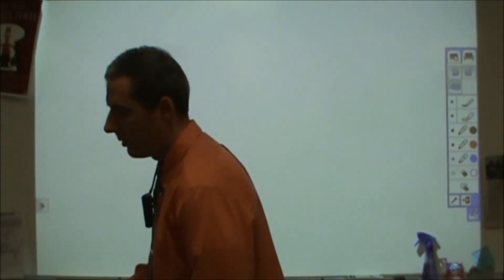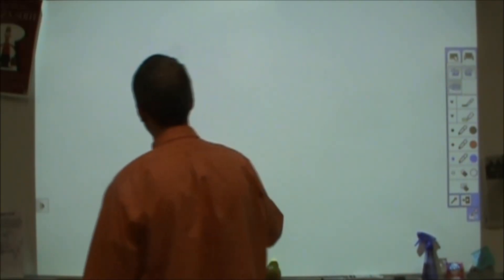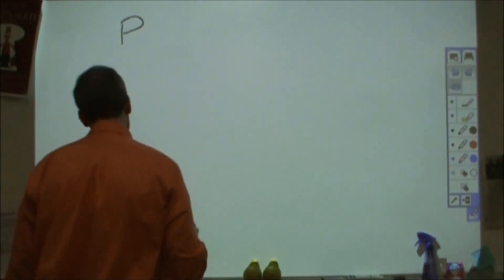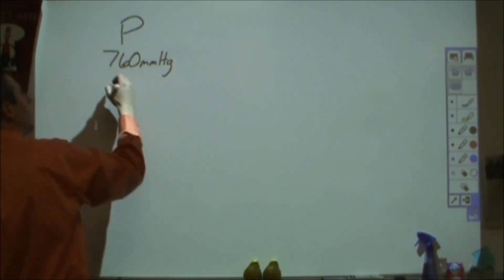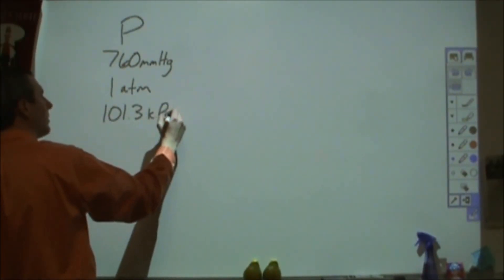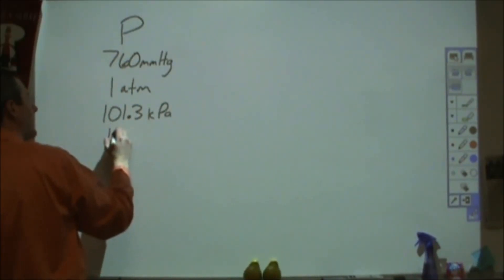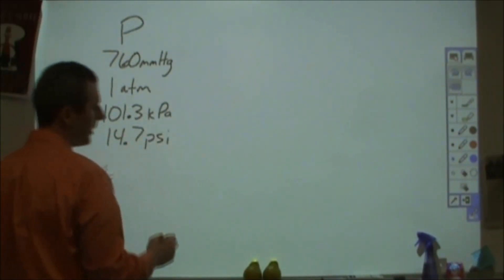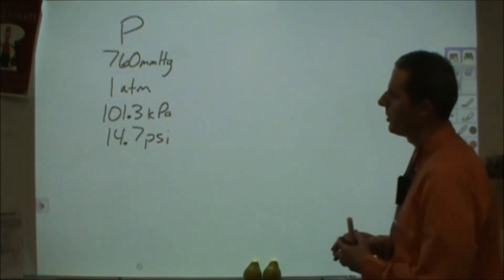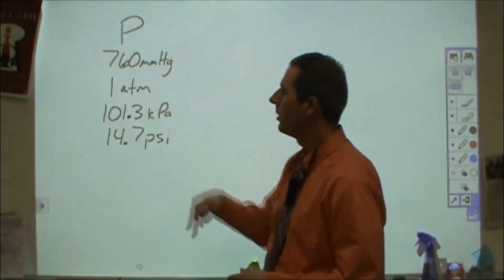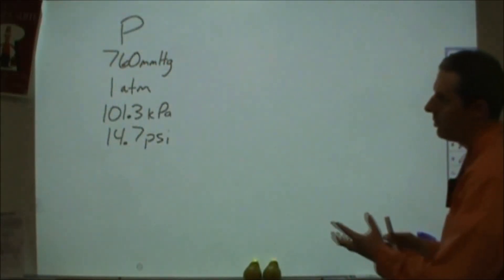Now, besides ideal gas law and combined gas law, the other things that you need to be aware of for gas laws and pressure calculations. You need to know all of your pressures. So you need to know all of the standard pressures, millimeters of mercury, atmospheres, kilopascals, psi. And then you want to be familiar with the fact that these four pressures are all equal to each other. Those are all representative of standard pressures. So 760 millimeters of mercury of pressure is equivalent to one atmosphere. And so I can use those for conversions.